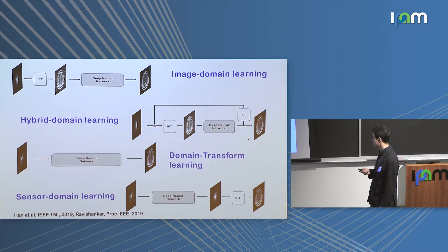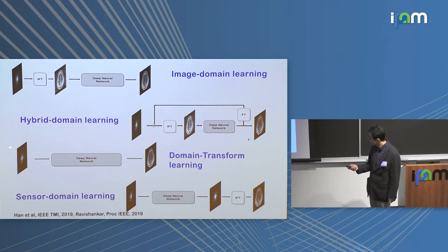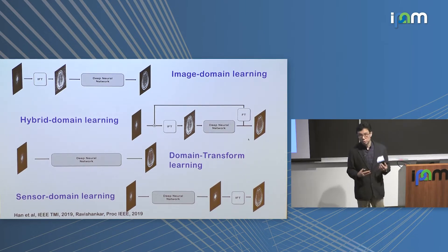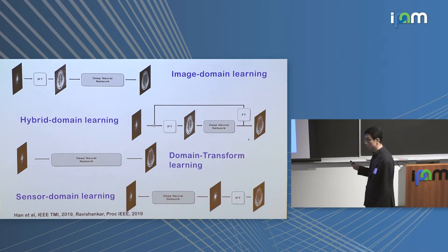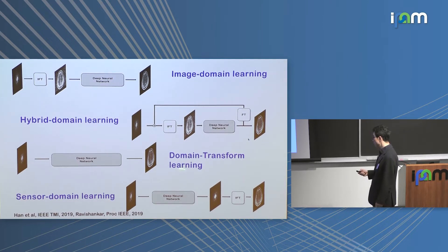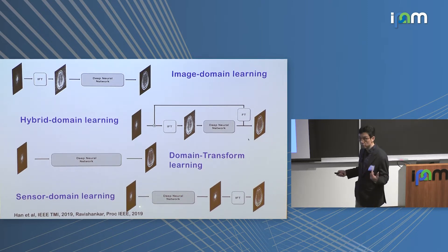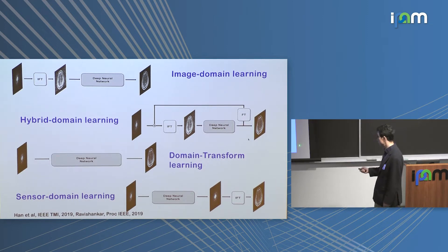People try to incorporate data consistency terms on top of image domain learning — this is the hybrid domain learning approach. A drastically different approach is the domain transform learning approach like AutoMap, which maps directly from sensor data to the image domain. That requires learning the global transform, needing fully connected layers, which is computationally and memory-intensive. Instead, we use an analytic transform as the global transform and use the neural network in the sensor or measurement domain, for example as interpolators or denoisers of measurement data, trained end-to-end.